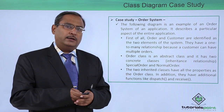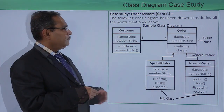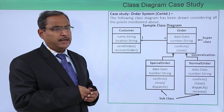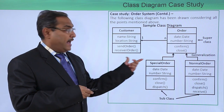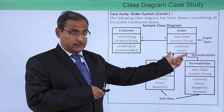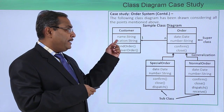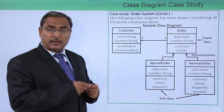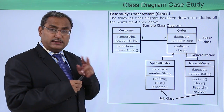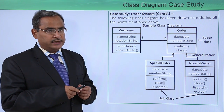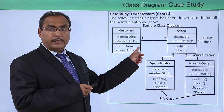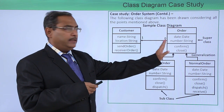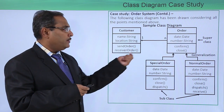Now let us look at the class diagram for this case study, drawn considering all the points mentioned earlier. Here we have the Customer class and the Order class. The Customer class has attributes: name (String) and location (String), and two methods: send order and receive order. One customer can produce multiple orders, so we have a one-to-many cardinality ratio, with the arrow directed from many to one.